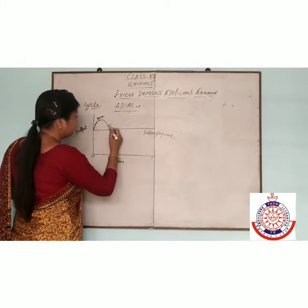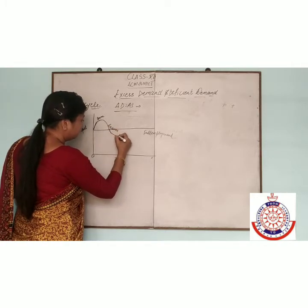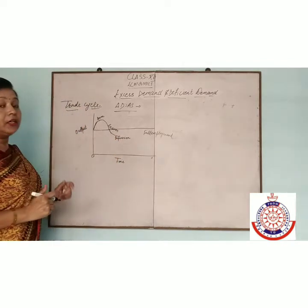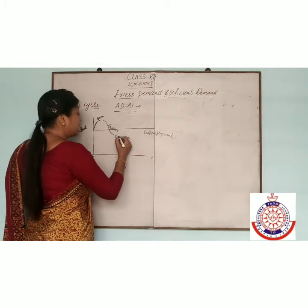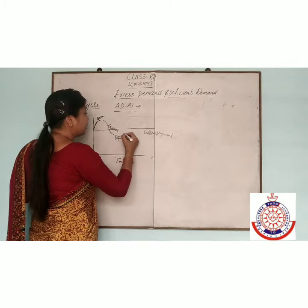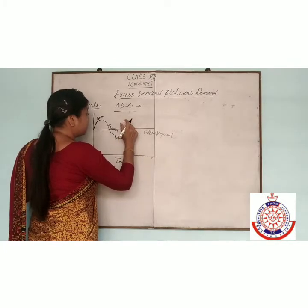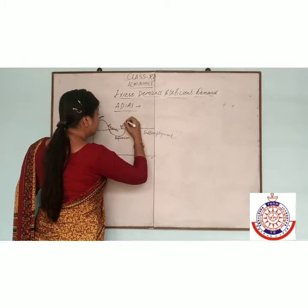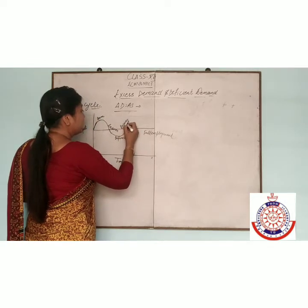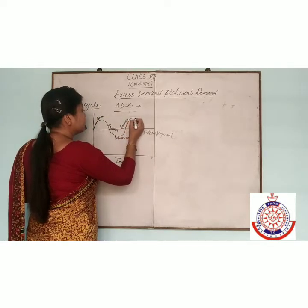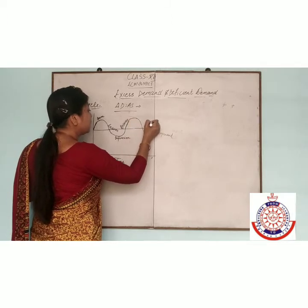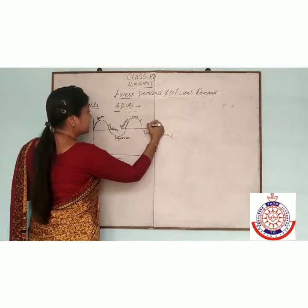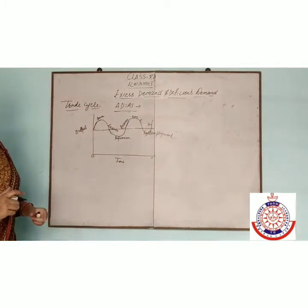If prices continuously fall in the economy, this is known as depression. But sometimes there will be a recovery in the economy where resources are used properly and the economy recovers. After recovery, there is again boom, then recession, then depression — this process continues. This is the trade cycle: boom, recession, depression, and recovery.